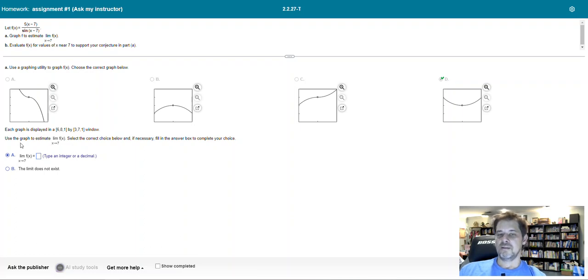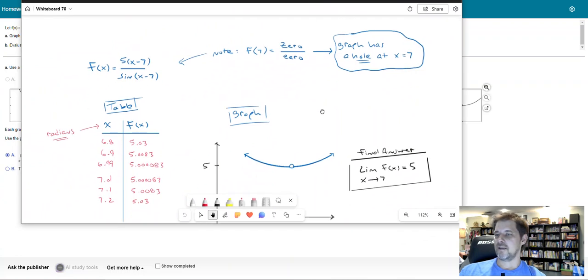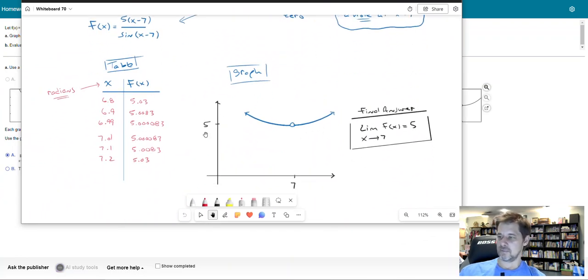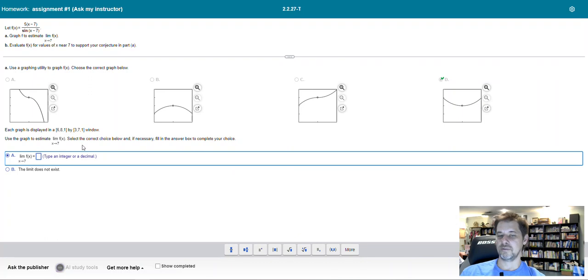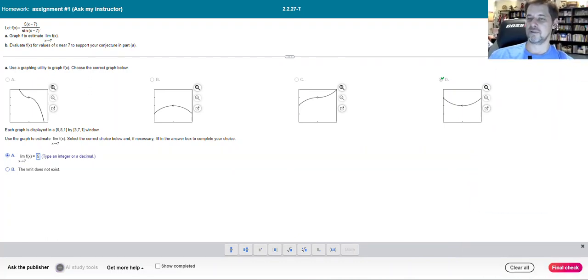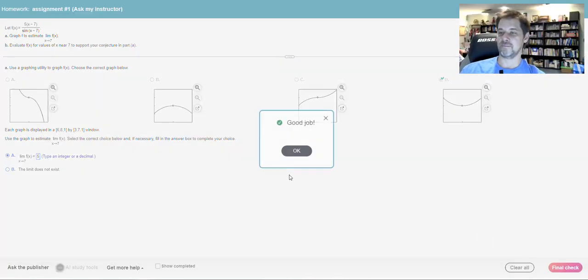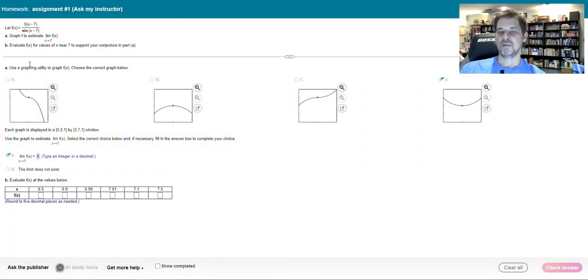And then for the limit, it says use the graph to estimate the limit, but really the graph and the table are one in the same thing. It's just a matter of how you see it. It's not really like they're different. Here I can see on the graph that if x is close to 7 but not equal to 7, then the y will be decisively close to 5. Same thing in the table, I can see that same result. Either way, I can come to the conclusion that the limit as x approaches 7 is equal to 5.